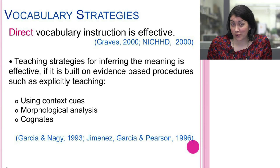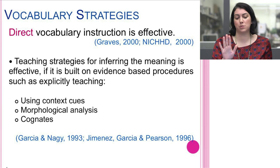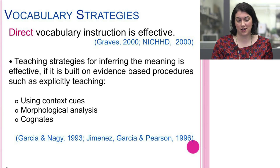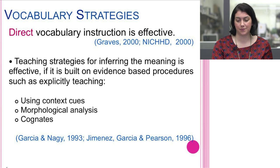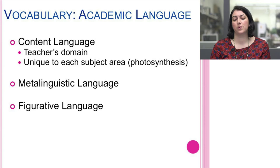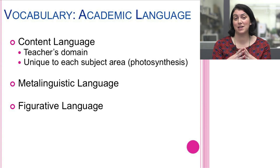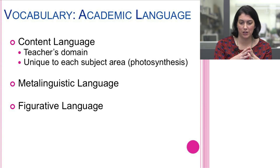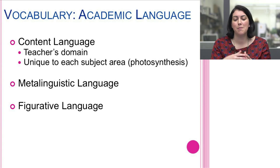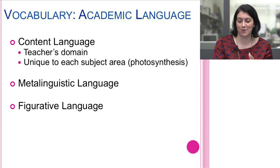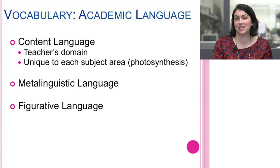Teaching strategies for inferring meaning is effective if it's built on evidence-based procedures such as explicit teaching, using context clues, morphological analysis, and cognates. It's so important that we help our students understand different types of academic language: content language, which is the teacher's domain and may be unique to each subject; metalinguistic language; and figurative language — helping students access and understand these distinctions.